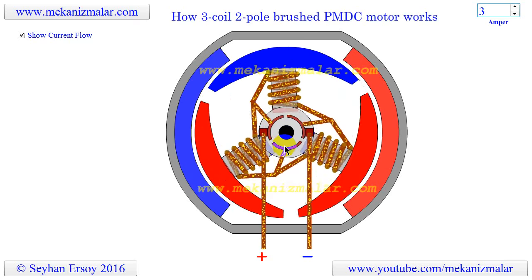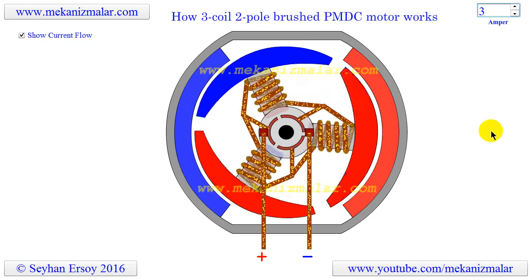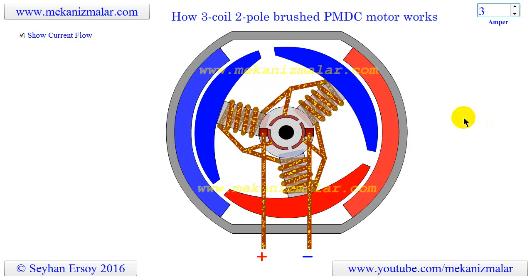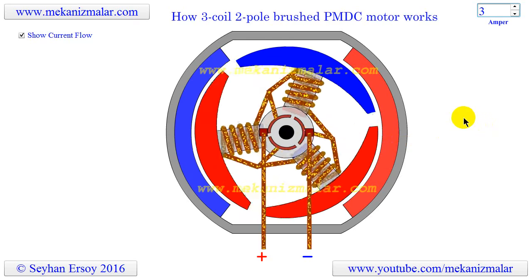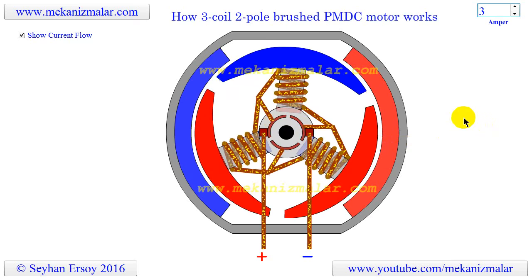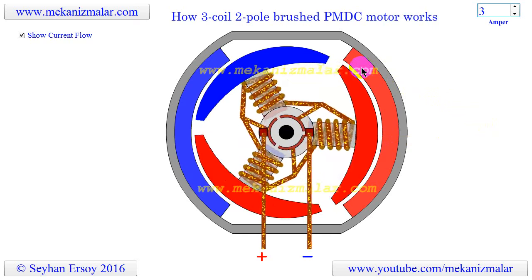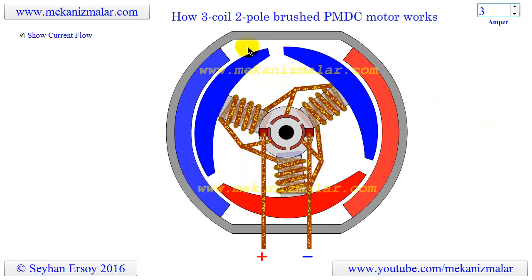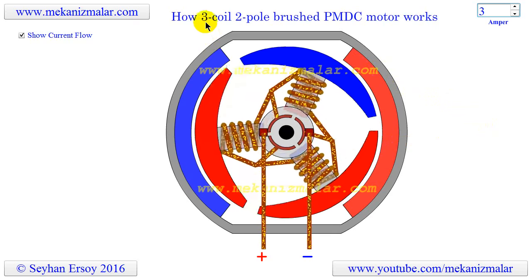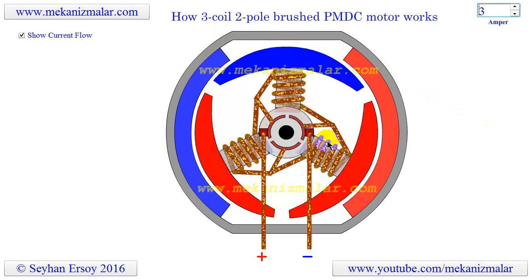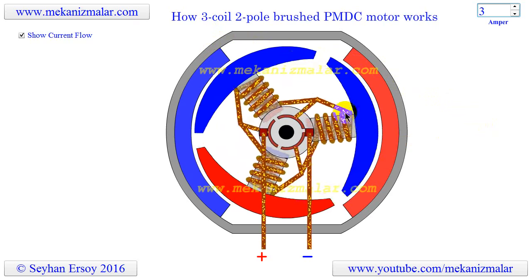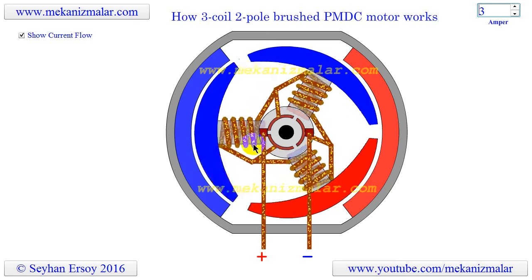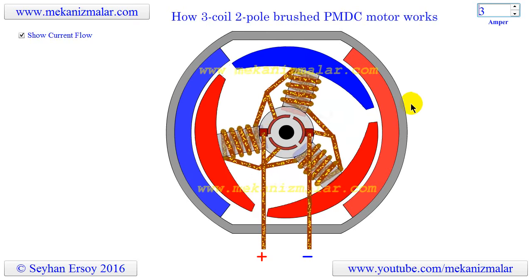The first electric motor developed based on electromagnetism was the two-coil and two-poles brushed DC motor. Since I could not find a naming convention for the brushed permanent magnet DC motors, I am calling this motor the three-coil two-poles permanent magnet DC motor, because the rotor contains three coils and the stator contains two poles.